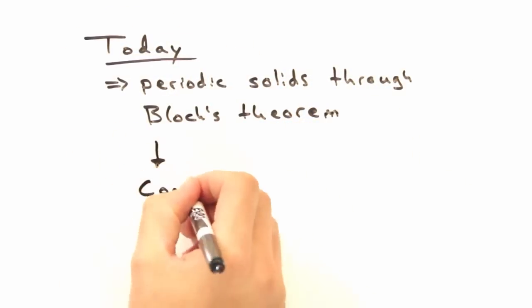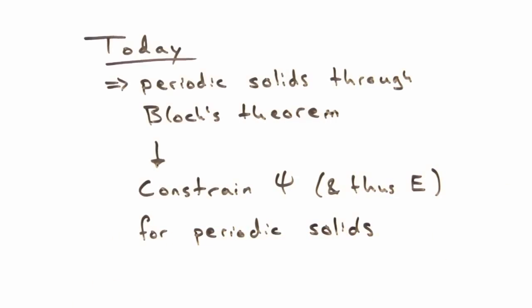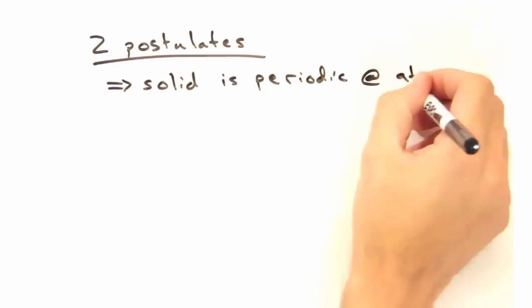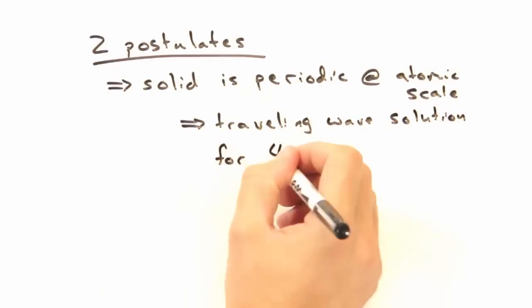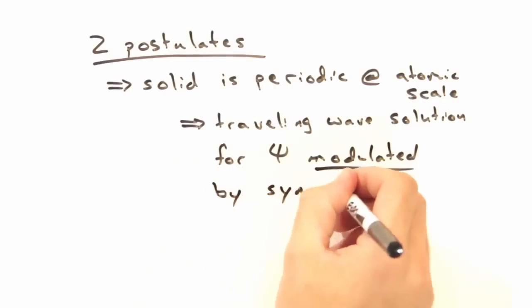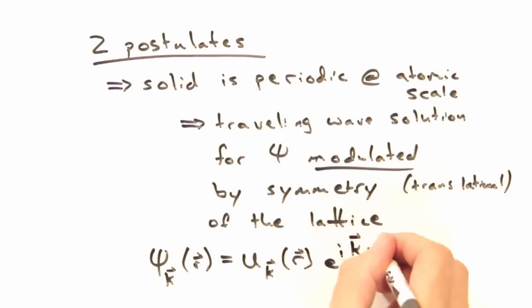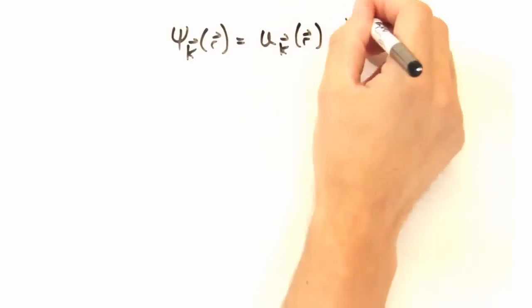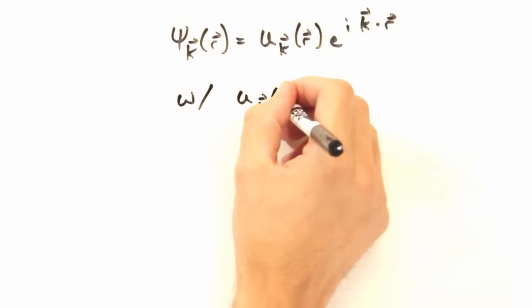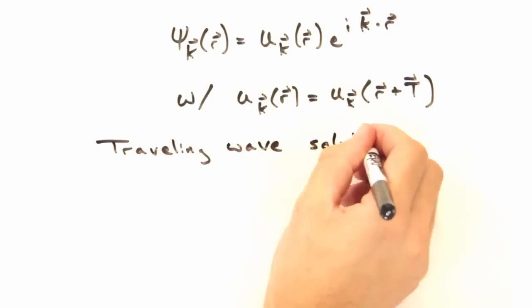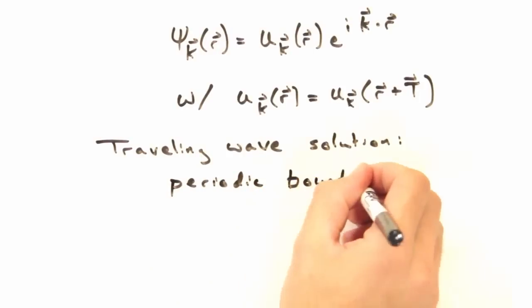Today our goal is to consider a periodic solid through Bloch's Theorem. Well what's Bloch's Theorem? It's just a way to understand the wave functions and energies for periodic solids. And it comes down to two postulates. The first states that because we have a solid that is periodic at the atomic scale, which is to say we have potential wells associated with each atom, we get a traveling wave solution for our wave function that gets modulated based on the symmetry of the lattice.